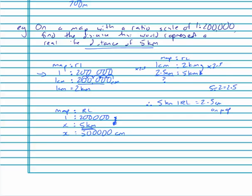Now, what did I do to 200,000 to get to 500,000? Just divide back if I have to—we get times 2.5. So I'm going to multiply 1 by 2.5, and I get 2.5 centimetres on the map.